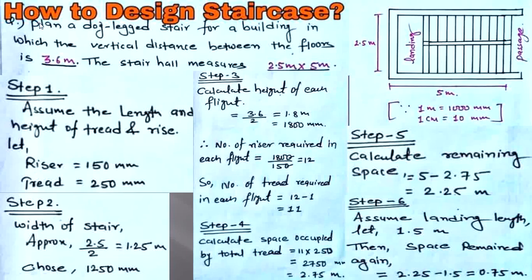Now check the next problem: plan a dog-legged staircase for a building in which the vertical distance between the floors is 3 meters or 3.2 meters, and the stair hall measures 2.5 meters by 4.5 meters, or you can take 2.5 meters by 5 meters. Solve this problem and comment on the video.